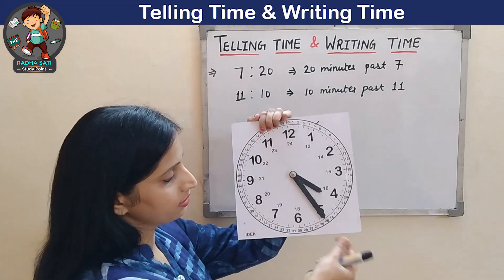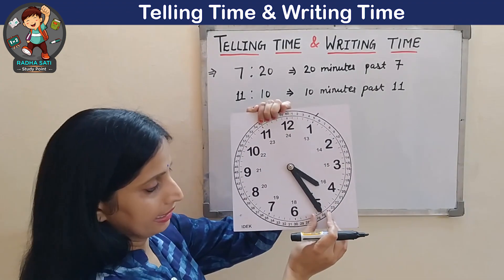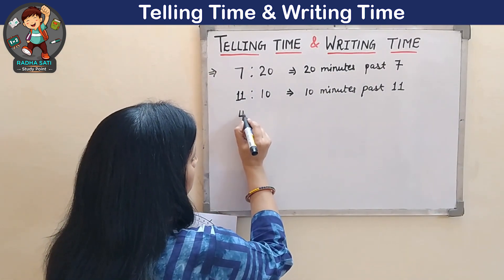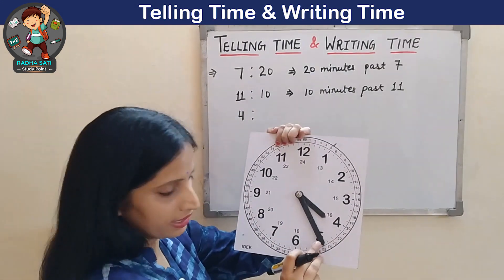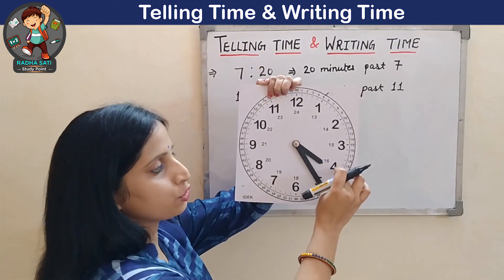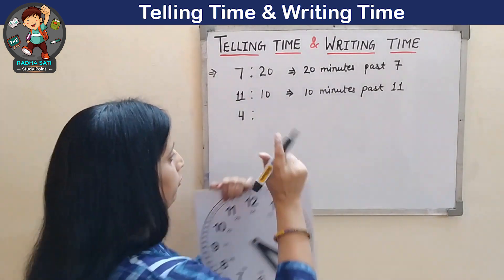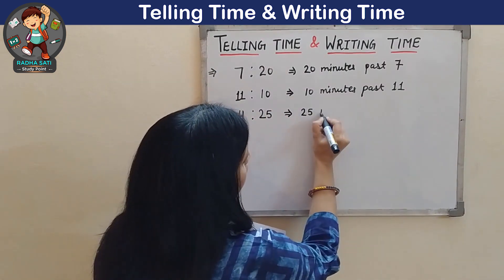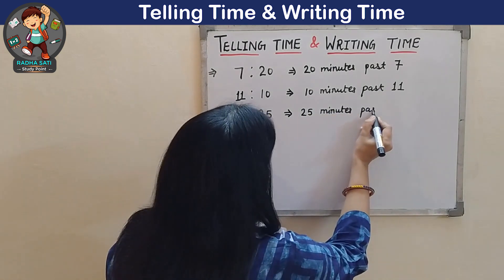Let's do one more example. This time the hour hand is at 4, and the minute hand is at 5. First write 4, then make two dots or colon. Now read the minute hand — it is at 5, so we do skip counting: 5, 10, 15, 20, 25. The time is 4:25. Or we can write: 25 minutes past 4.